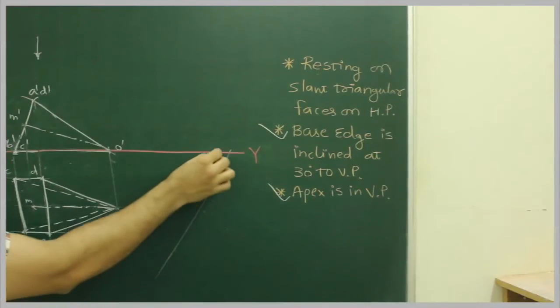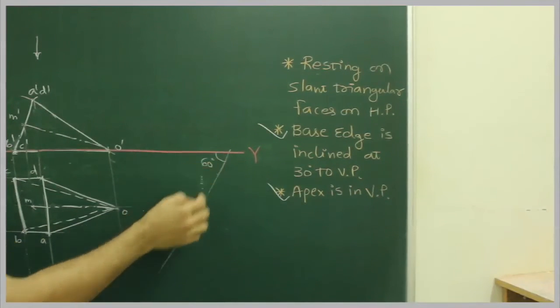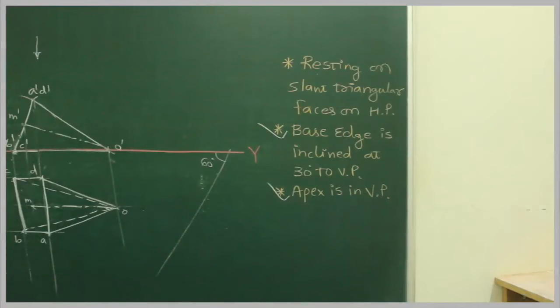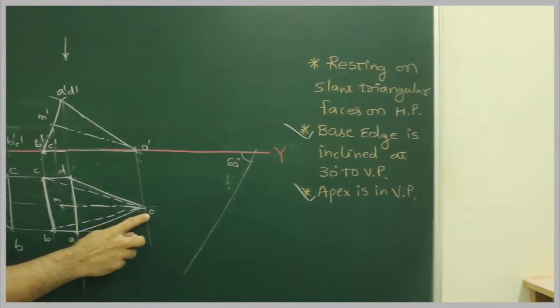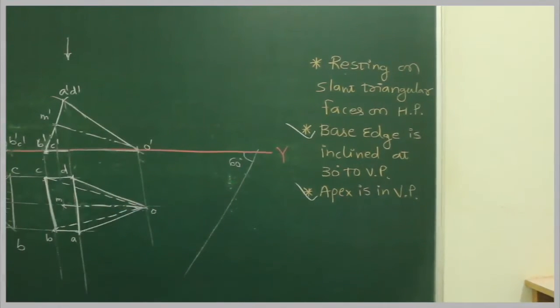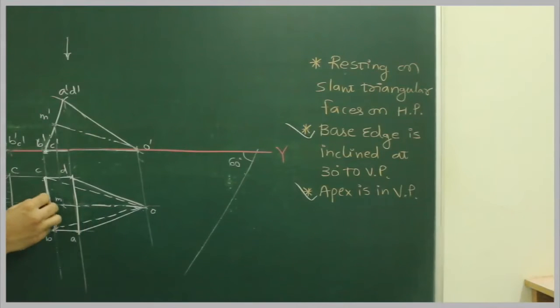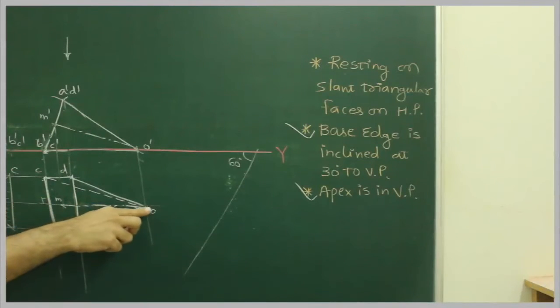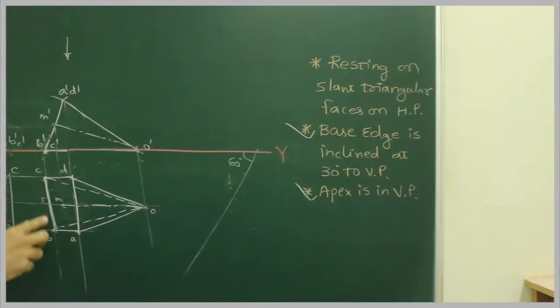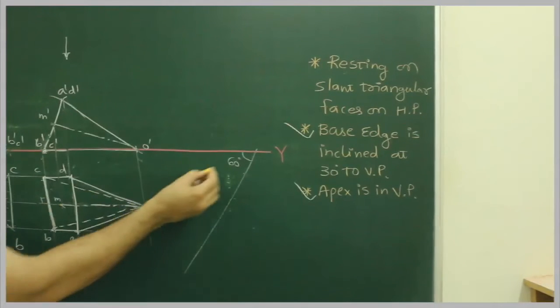We will draw 60 degree. You will ask me why we are doing 60 degree? Because here we want base edge inclined at 30 degree as well as Apex O on XY line. So if you see this line, they are perpendicular to each other. See, the line passing through O and B'C is perpendicular to each other. So I will take 60 degree. I will mark O, you know.